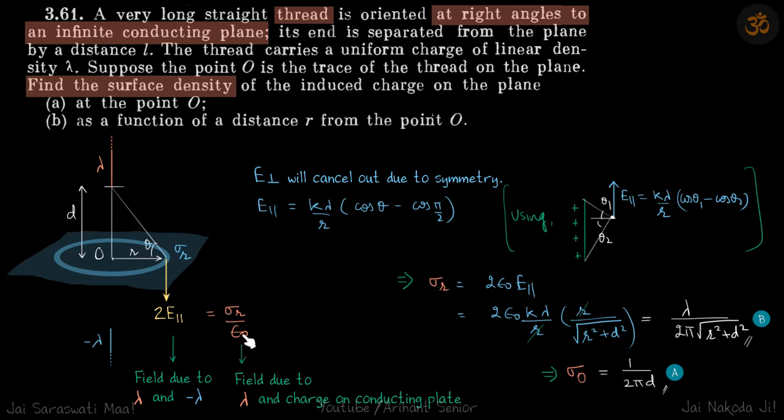Always remember, sigma r by epsilon is the net electric field in front of a conductor. Not because of the conductor only, but because of all the electric fields that exist combined together. In just front of the conductor, it is always sigma r by epsilon.